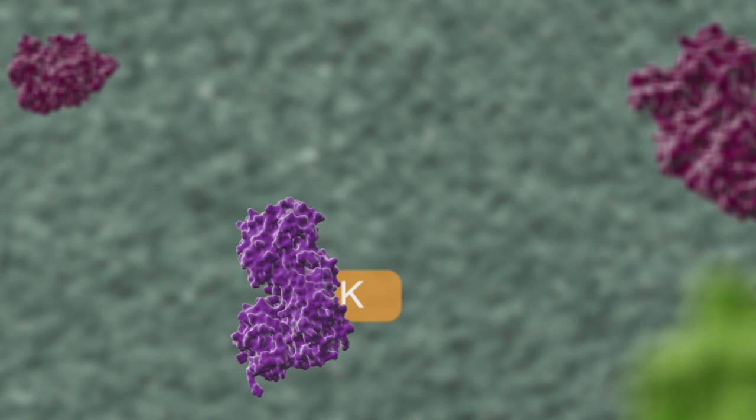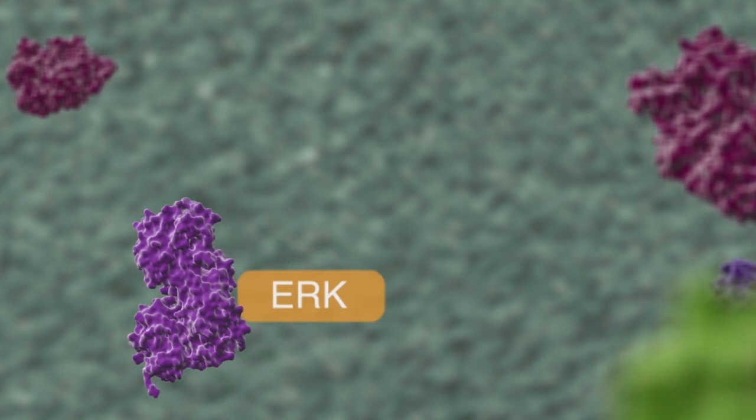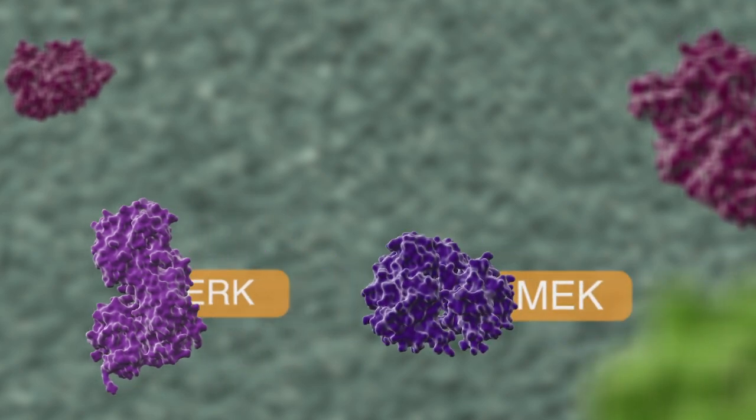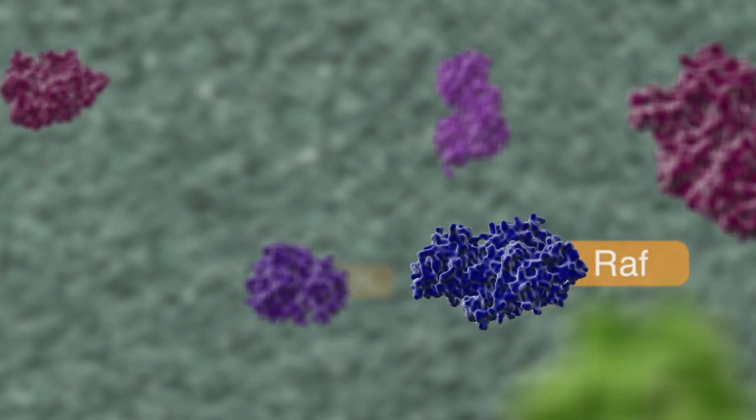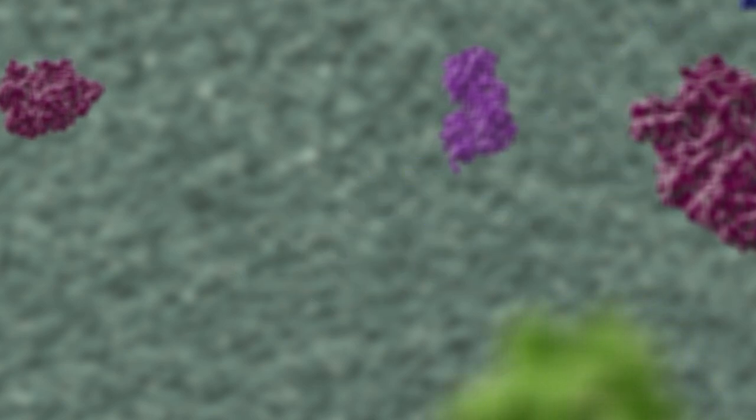MAPK pathways are organized in three tiers of kinases consisting of a MAPK kinase, or MAPKK, an activator of MAPK kinase, MAPK kinase kinase, and a MAPK kinase kinase kinase, or MAP3K.